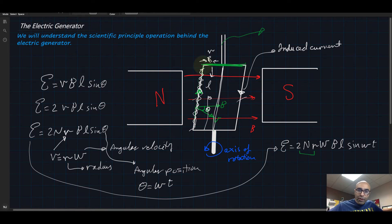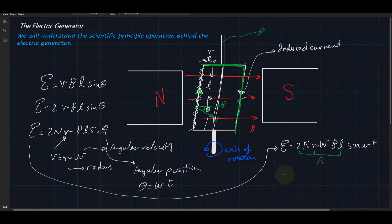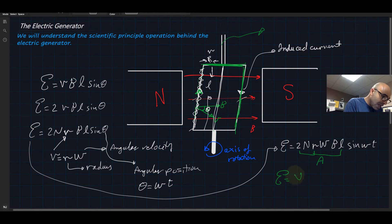Because this r times 2 gives us the diameter or the whole width of the coil, and L is this part. Now L times 2r gives us the area. So that's we just made it simpler a little bit. So E is equal to NBA and remains omega times sin omega t.